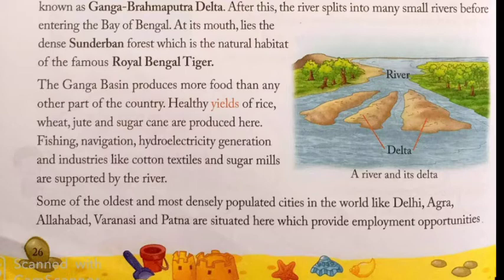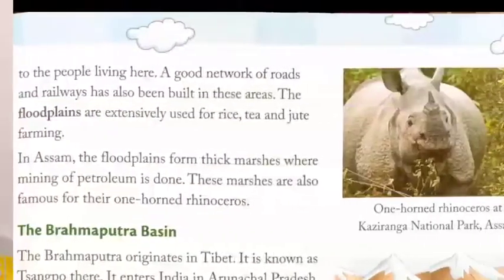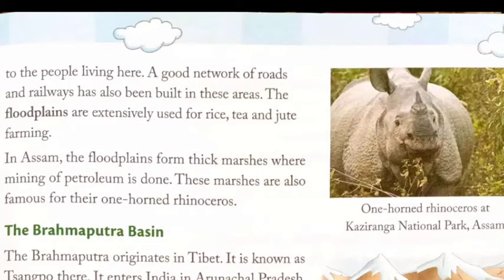A picture shows a river and its delta. Some of the oldest and most densely populated cities like Delhi, Agra, Allahabad, Varanasi and Patna are situated here, providing employment opportunities. A good network of roads and railways has been built in these areas. The floodplains are extensively used for rice, tea and jute farming. In Assam, the floodplains form thick marshes where mining of petroleum is done. These marshes are also famous for the one-horned rhinoceros, pictured at Kaziranga National Park, Assam.